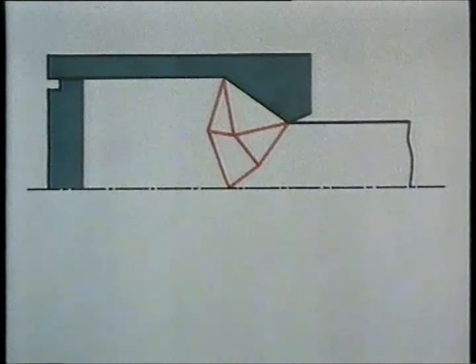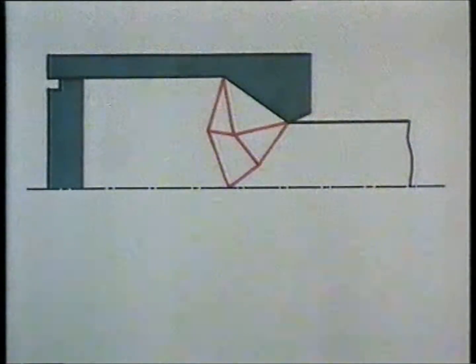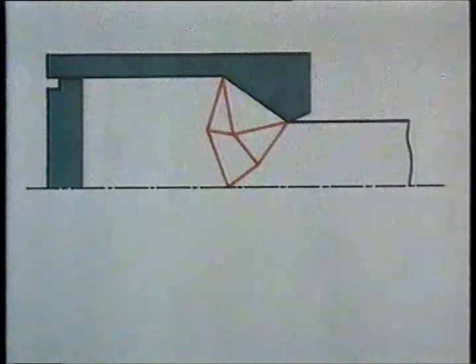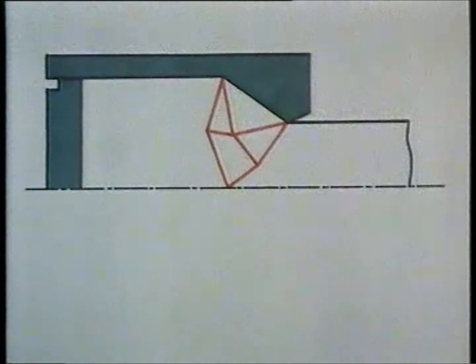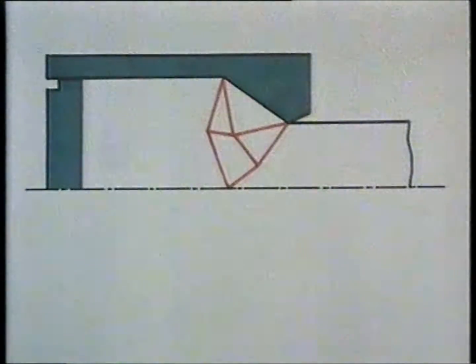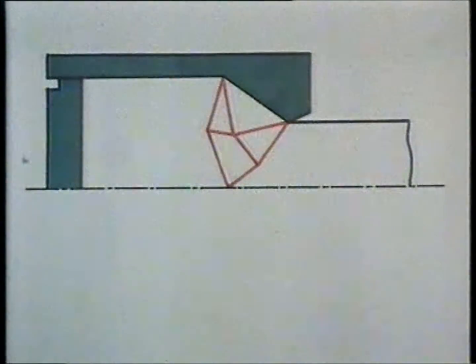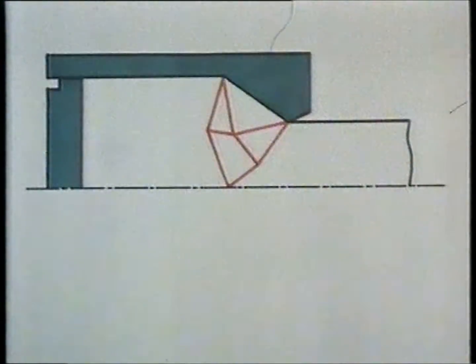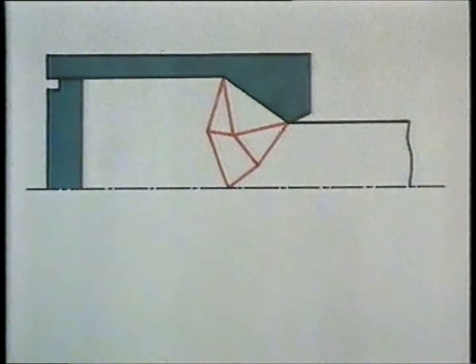The principle of the upper bound method is that we guess a deformation pattern which is kinematically permissible. It is assumed that the velocity of any material particle changes only when the particle is crossing one of the red lines in the upper bound field. The aim of our analysis is to calculate the amount of work necessary for the deformation to proceed.